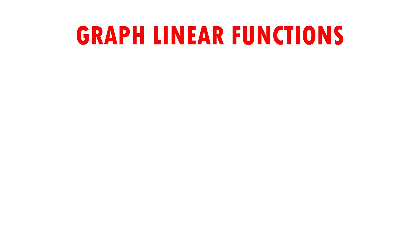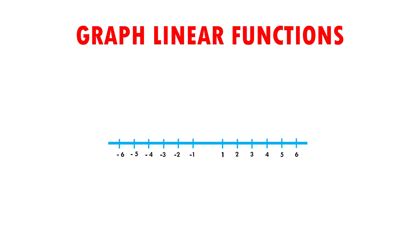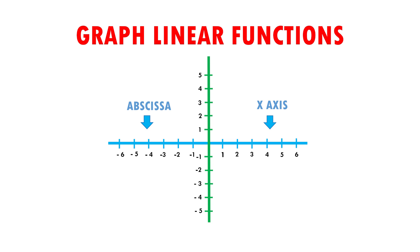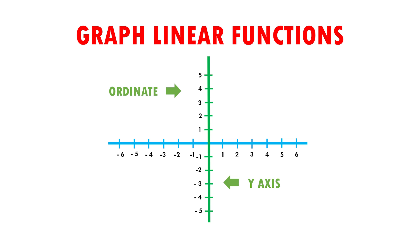The Cartesian plane is formed by two number lines, one horizontal and one vertical, that intersect at a point. The horizontal line, which is the blue one, is called the abscissa or x-axis, and the vertical line, which is the green one, is called the ordinate or the y-axis. The point where two lines intersect receives the name of origin.